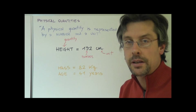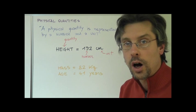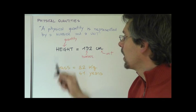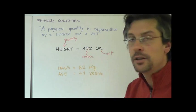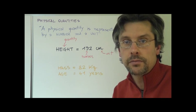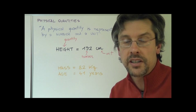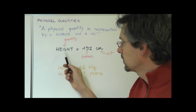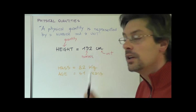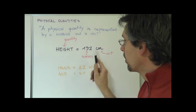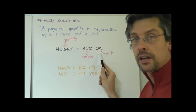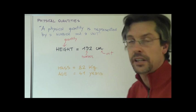Since we can measure, a physical quantity will always be represented by two elements, a number and a unit. Let's make an example for myself. What is Mr. Boscarini's height? My height, that is the physical quantity, is 192 centimeters. So 192 is the number, and centimeters, abbreviated in cm, is the unit.